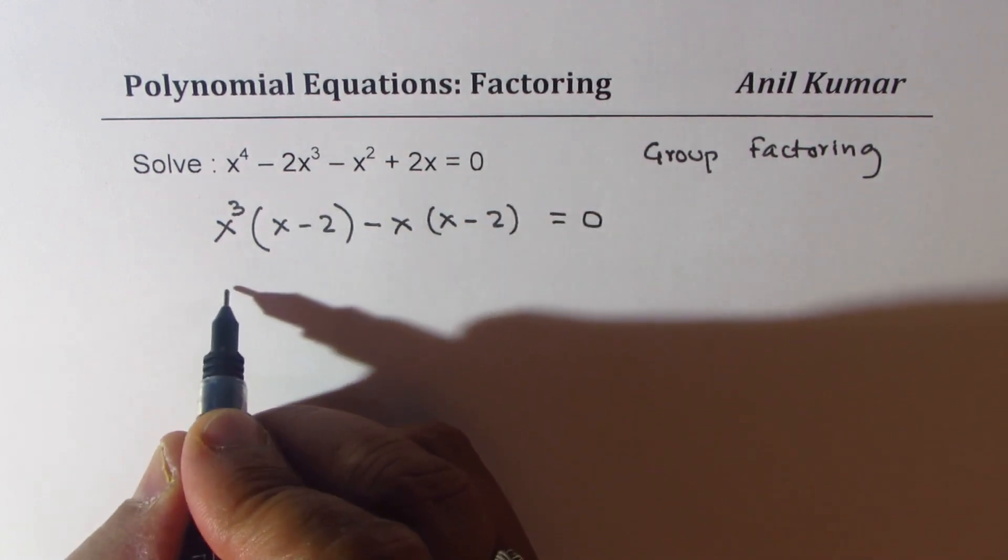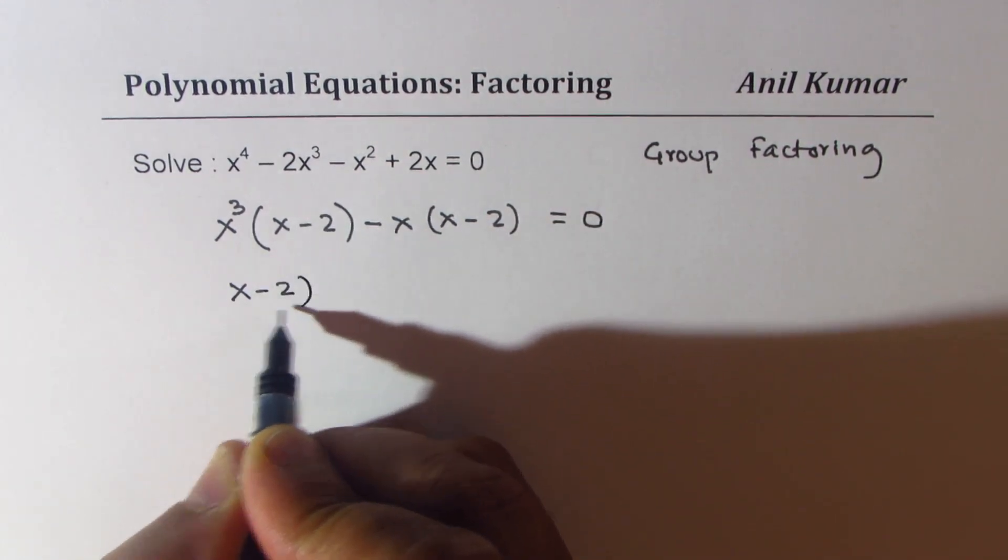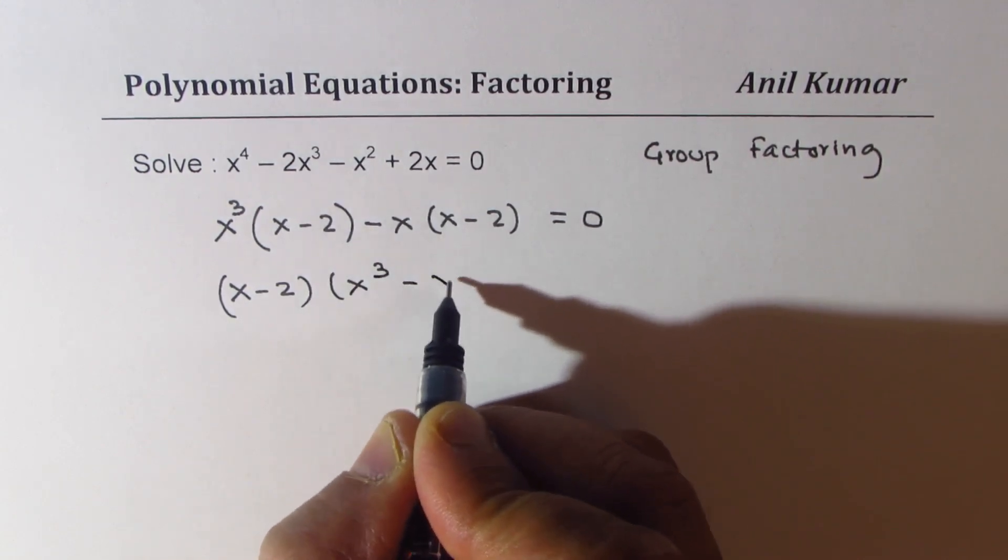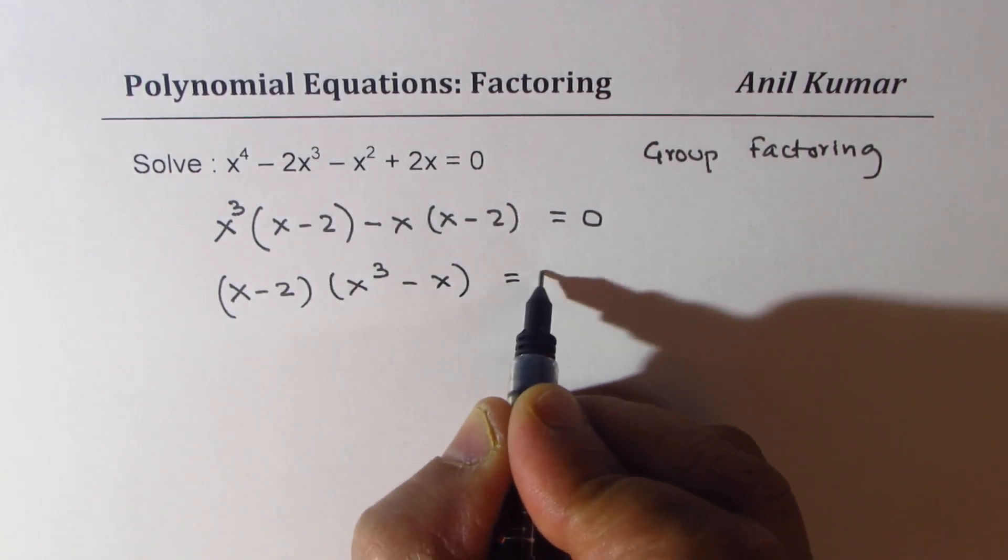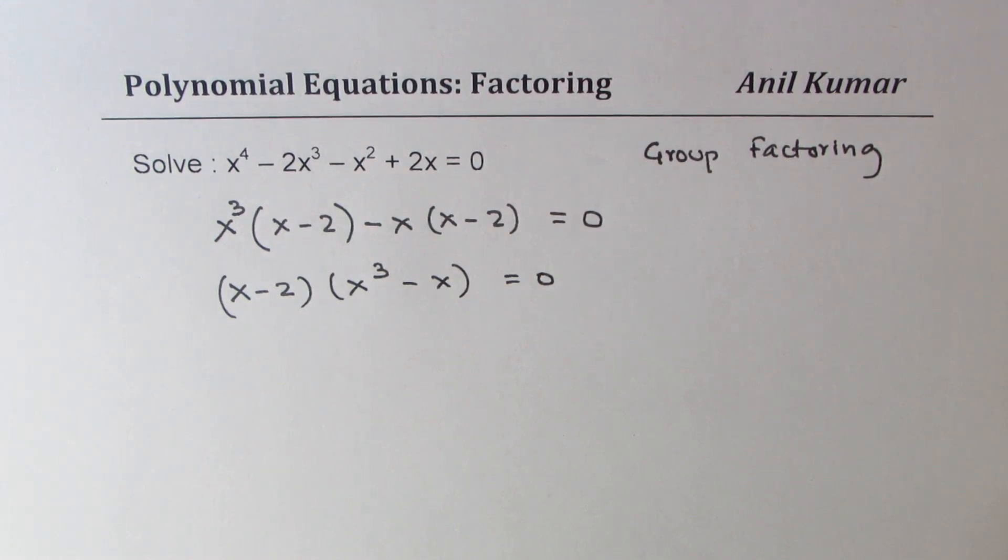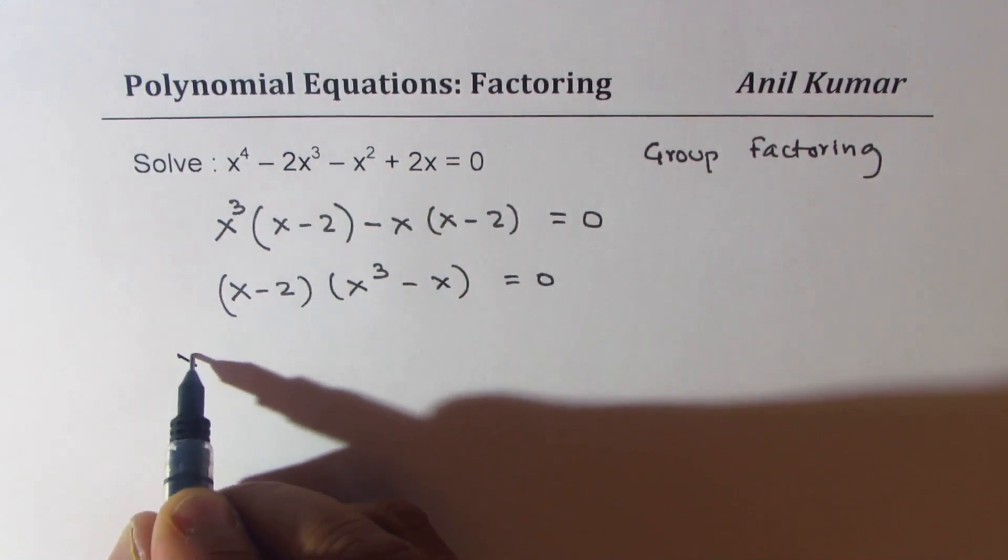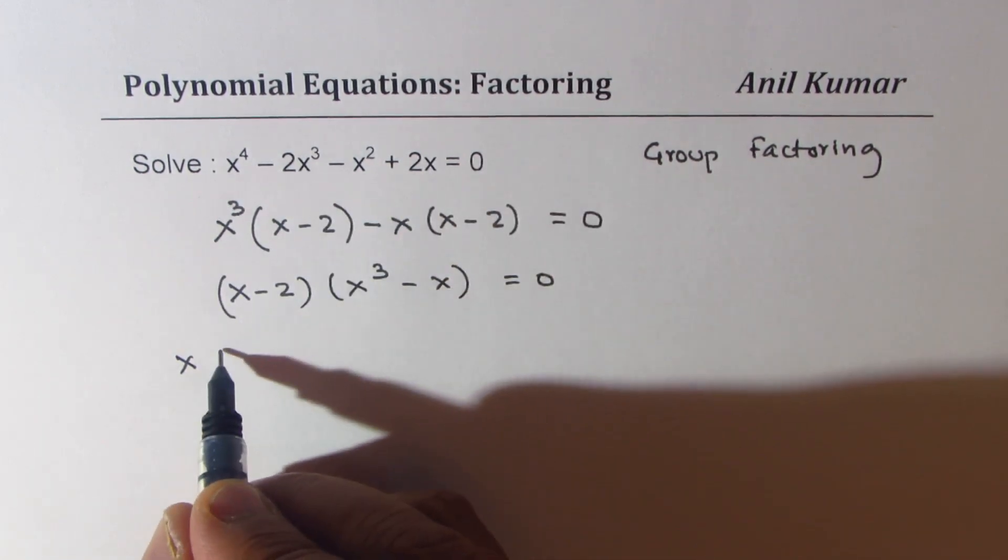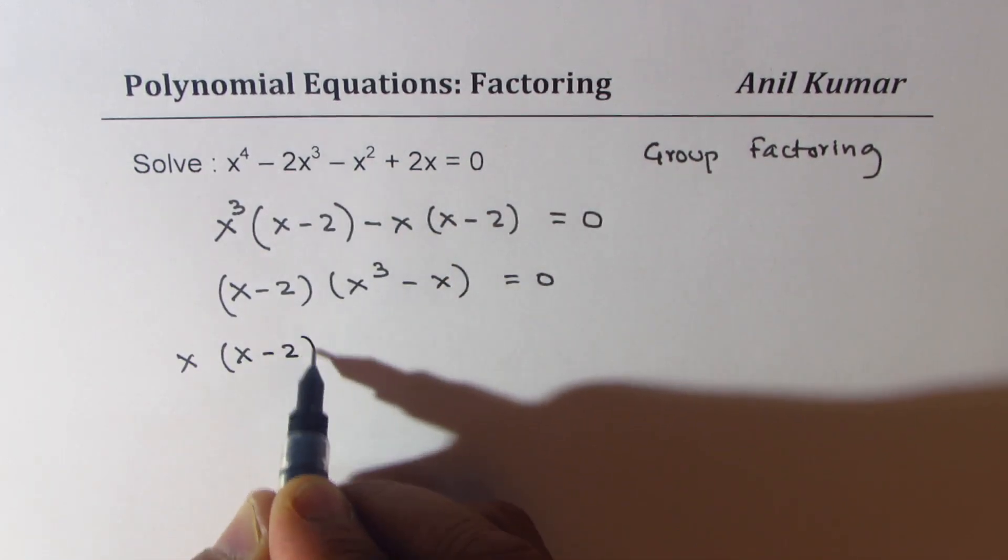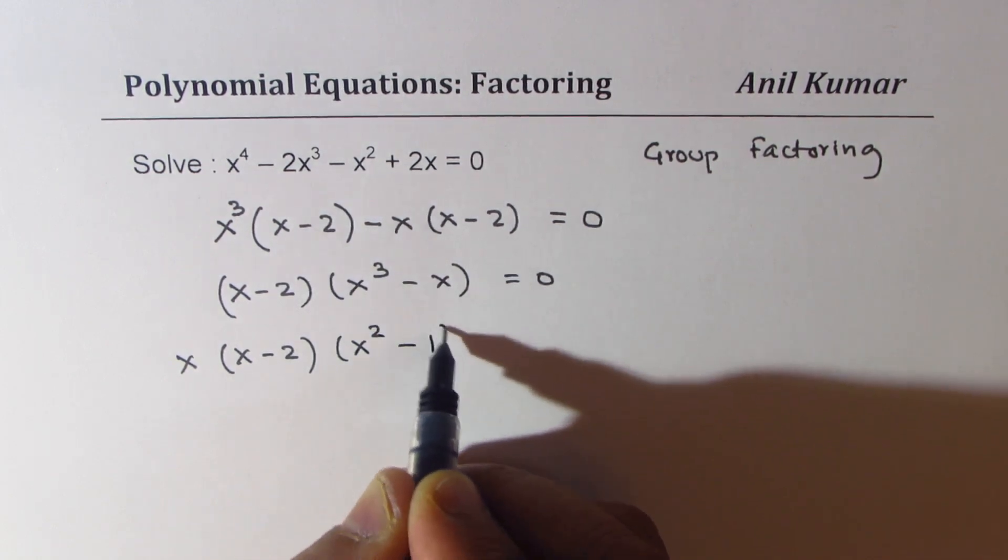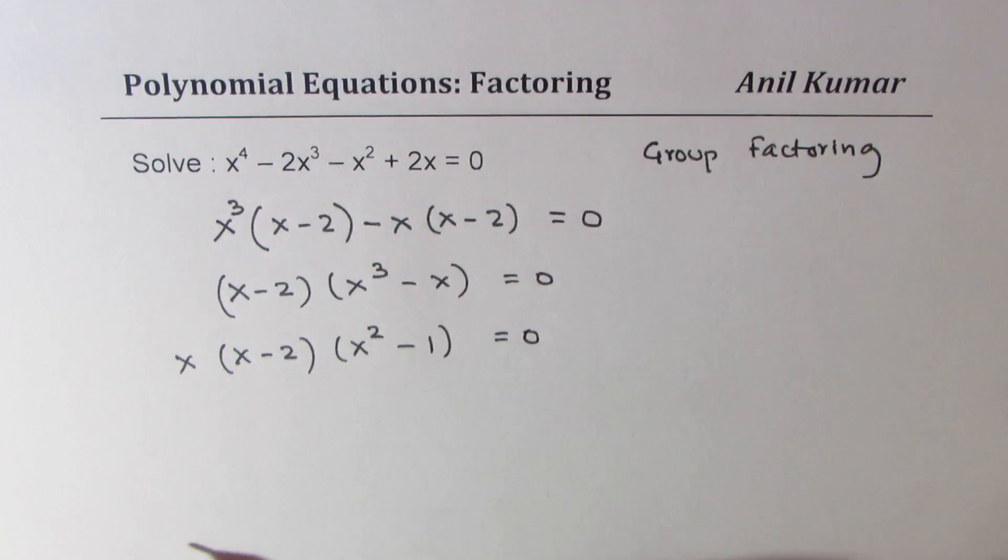x minus 2 is a common factor. So you get x cubed minus x equal to 0. Now, from x cubed minus x, we can factor out x. I could have factored x initially also. Once you factor out x, you get x squared minus 1 equal to 0.